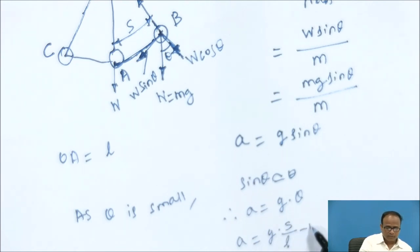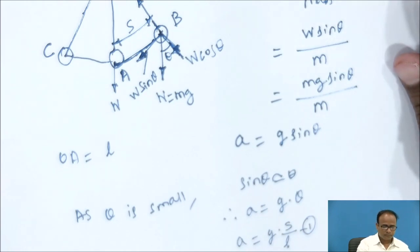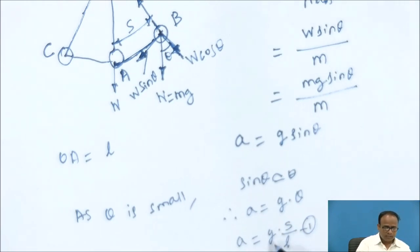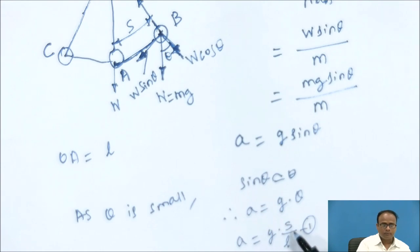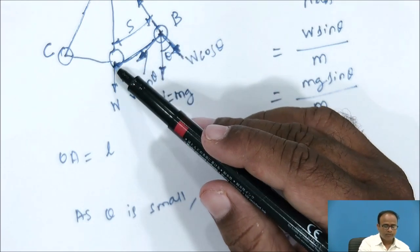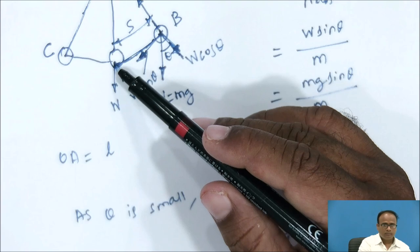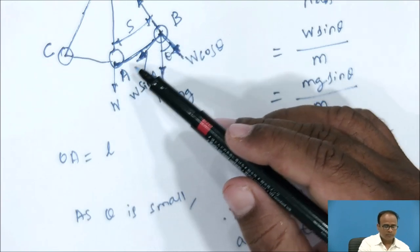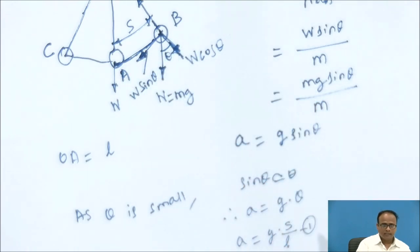Here, g is the acceleration due to gravity (9.81 m/s²), and L is the length of string or pendulum, which is constant. So acceleration is directly proportional to arc length S — that is, the distance of position B from the mean position A. AB is the arc length, which is S.